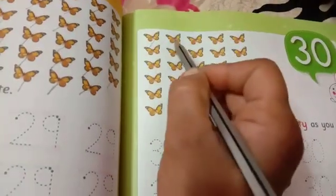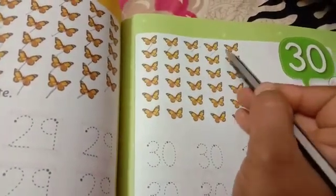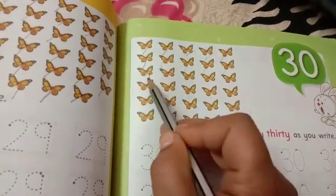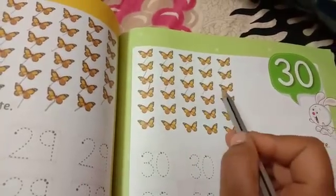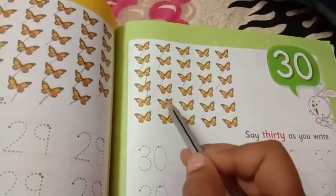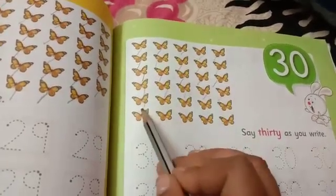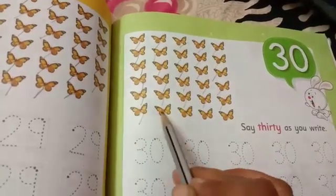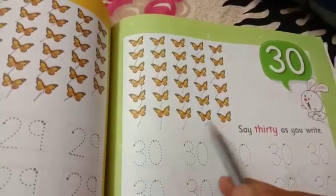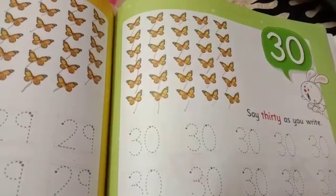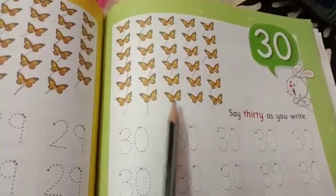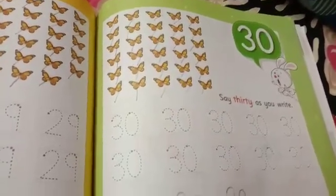Count these butterflies: 1, 2, 3, 4, 5, 6, 7, 8, 9, 10, 11, 12, 13, 14, 15, 16, 17, 18, 19, 20, 21, 22, 23, 24, 25, 26, 27, 28, 29, 30. So there are 30 butterflies. This is number 30 and there are 30 butterflies.